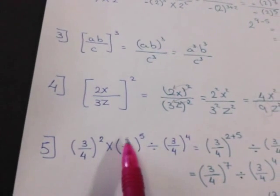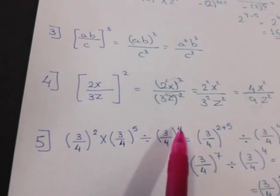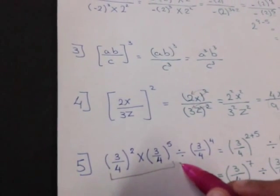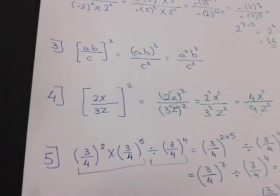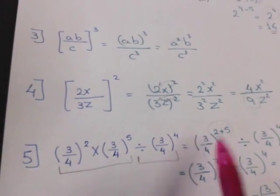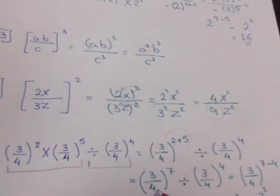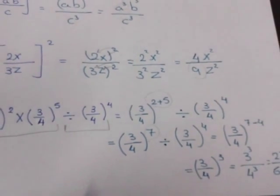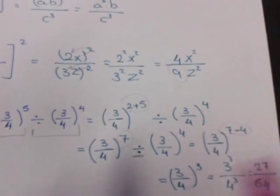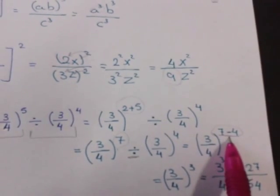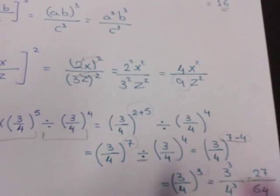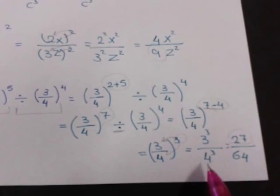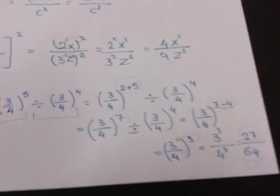Number five, the last one: three over four to the power two, times three over four to the power five, divided by three over four to the power four. First I solve the multiplication: three over four to the power two plus five equals three over four to the power seven. Then I divide: subtract the powers, seven minus four equals three. I distribute the power three: three power three over four power three, giving twenty-seven over sixty-four.